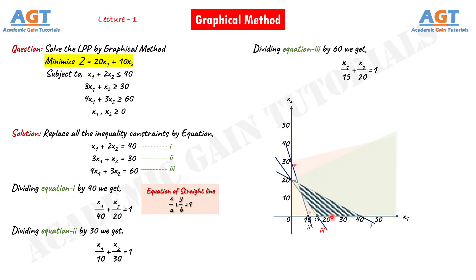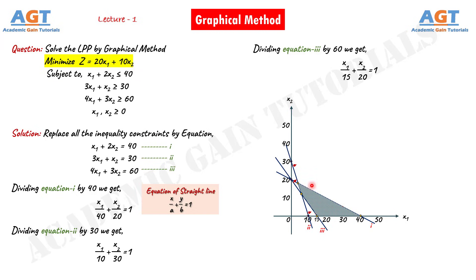There are four corner points in this feasible region. Let this extreme corner point be A, this is point B, this is point C, and this is point D. So these are the four extreme points or corner points that make up this feasible region.